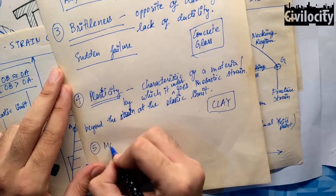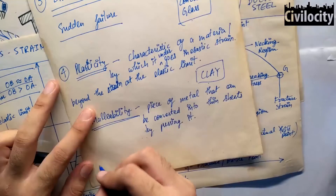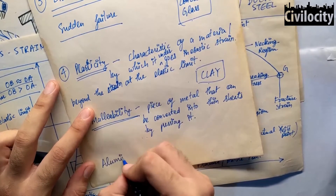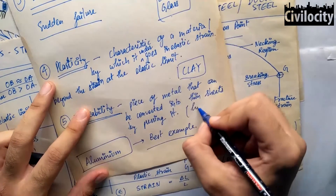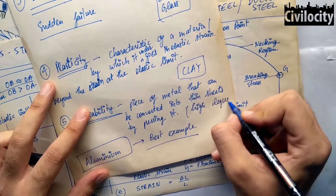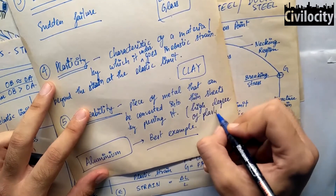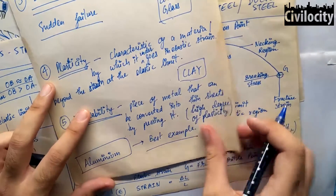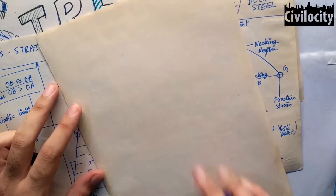Now let's talk about malleability. Malleable materials are materials that can be converted into thin sheets. The best example is aluminum — you have seen aluminum wrap in which you pack your food. Malleable materials are materials that convert into thin sheets, and if they can convert into thin sheets, it means they possess a high degree of plasticity. Plasticity means that once deformed, they will never come back.